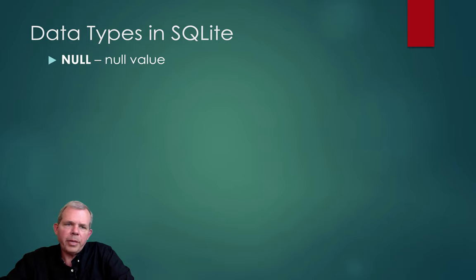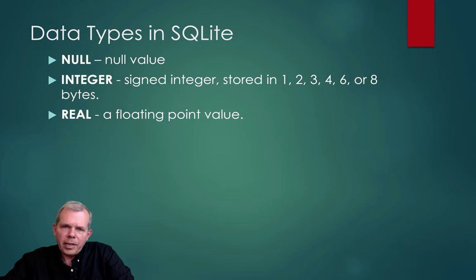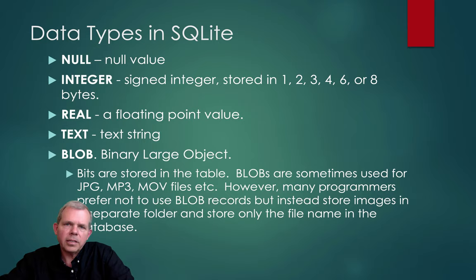The data types you can put into a SQLite database are limited. You can have a null value, integers which are automatically scaled to the appropriate number of bits, a real number for decimals or floating point, and text which covers almost everything — long or short text. There's also something called a blob, but don't bother with blobs. If you have big things like JPEGs or movie files, save them in a directory and put the text of that link into your database, so your database remains small.